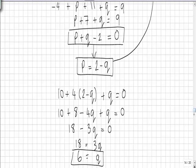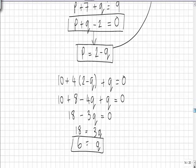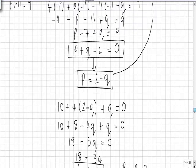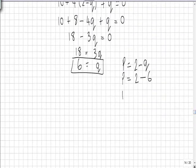Given that q equals 6, we know that p equals 2 minus q. Therefore, p equals 2 minus 6, giving a value of p equals -4.